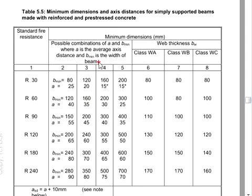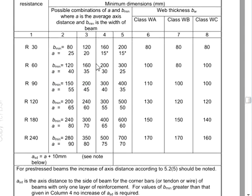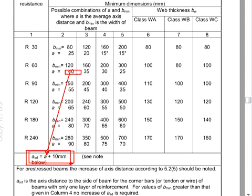Or you can go for a more conservative measure — you can always go for the larger axis distance value. So in order to determine the axis distance, the equation applies and you get 40. Substituting into the equation, your axis distance will be equal to 50 mm.